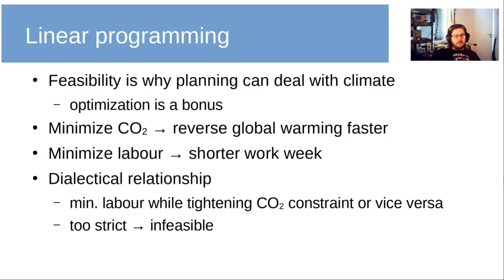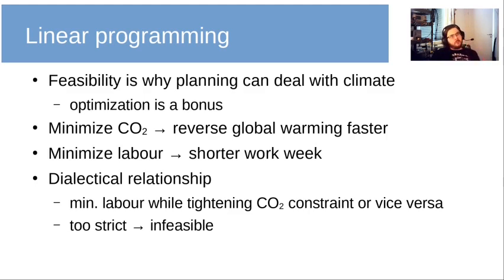Feasibility is key to why planning can deal with the climate situation, and the optimization is more of a bonus. For example, if we minimize carbon dioxide, then we will reverse global warming faster. Whereas if we minimize labor instead, we can get a shorter work week. These two are in a sort of dialectical relationship — they're in tension with each other. If we try to reduce either too much, we eventually get to a situation which is infeasible, which is qualitatively different from just debating, say, a 20-hour versus 24-hour work week — that's a quantitative difference.